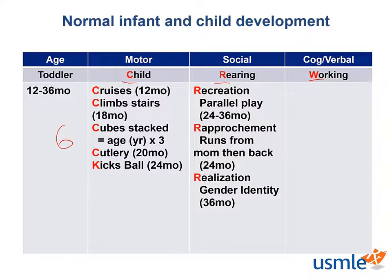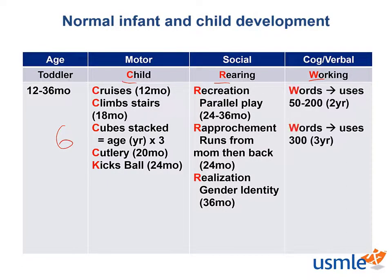Social milestones include parallel play at 24 months, where the child may sit next to another child of their age and play, but not necessarily together. Rapprochement by 24 months, which is when a child will run away from mom for a few moments and then returns back quickly. The child will realize their core identity by 36 months. Verbally, these kids are able to use 200 words by age 2 and 300 words by age 3.